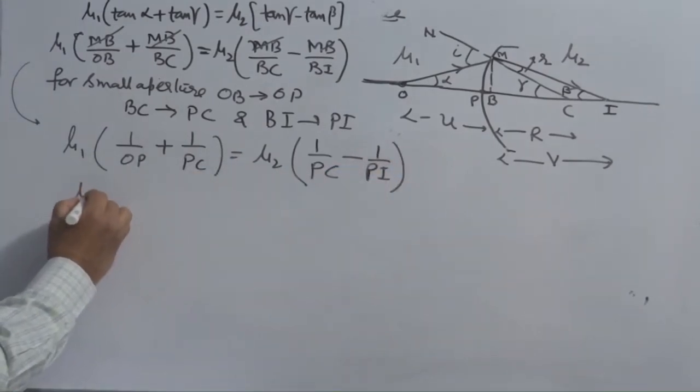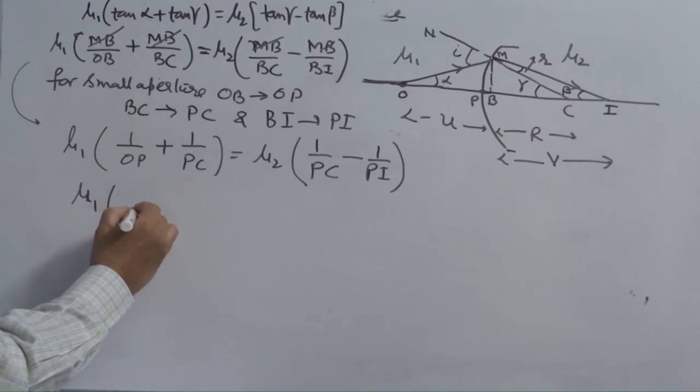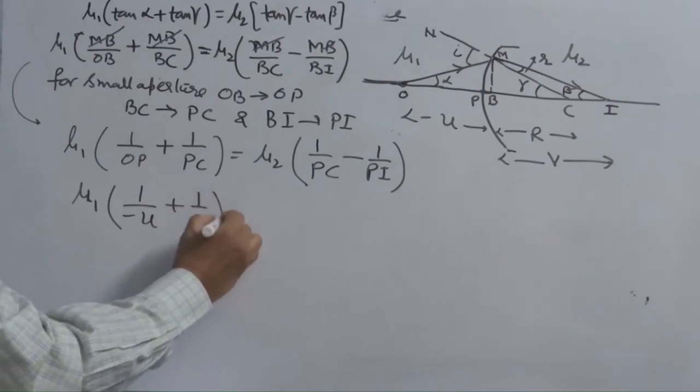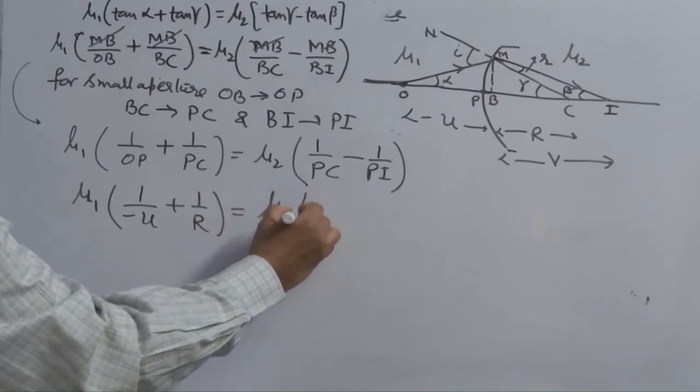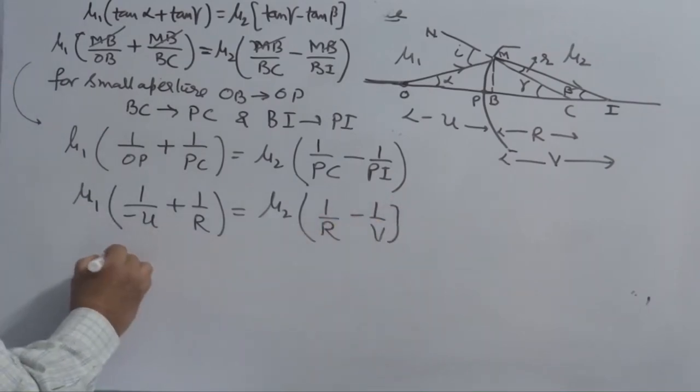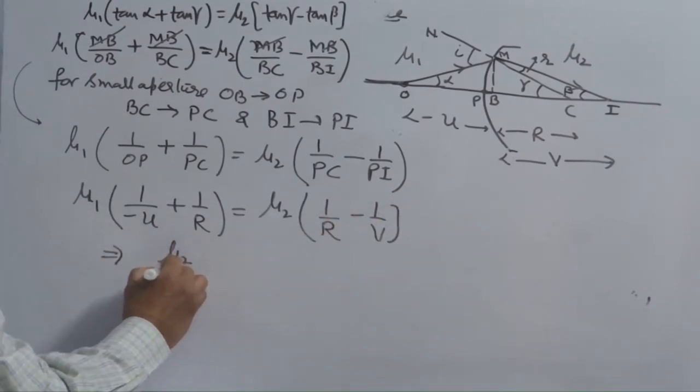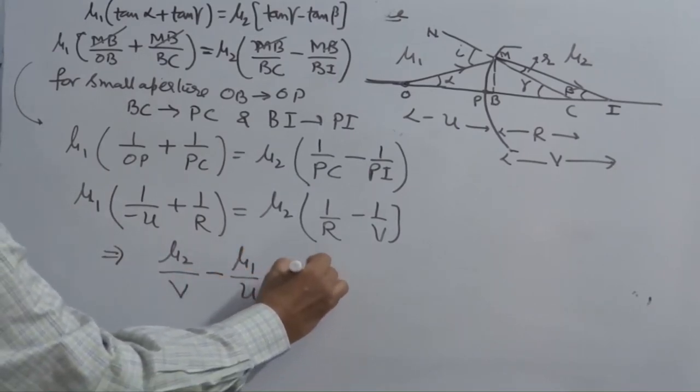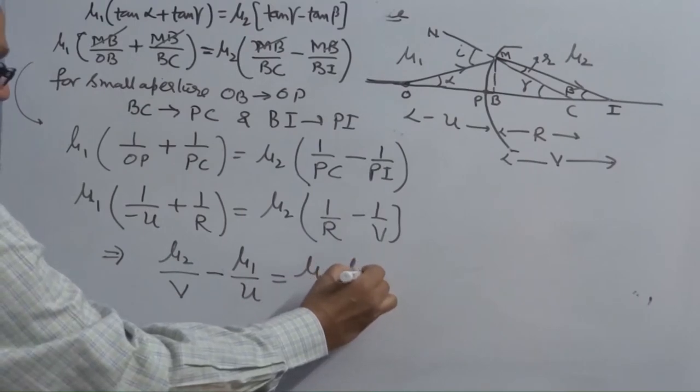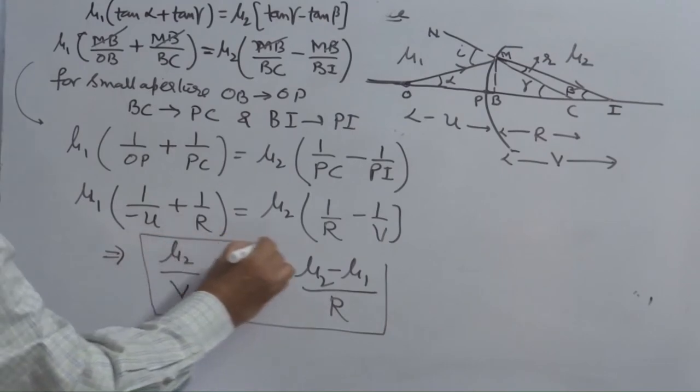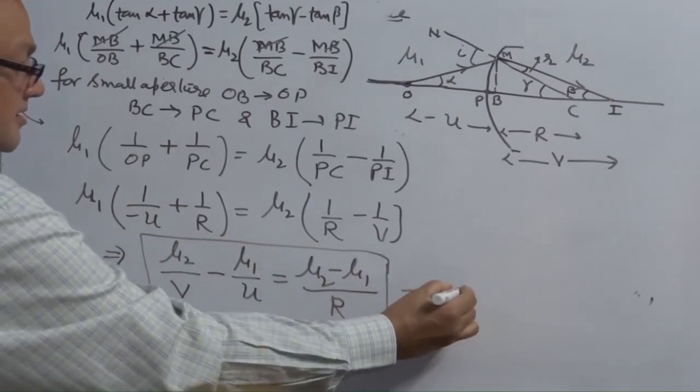Now, you can put the values with proper sign convention. OP is minus U, PC is R, mu 2, PC is R, minus 1 over V. Rearrange the terms. You will get mu 2 over V minus mu 1 over U is equal to mu 2 minus mu 1 over R. This is very important relation.